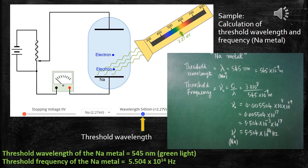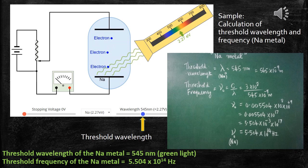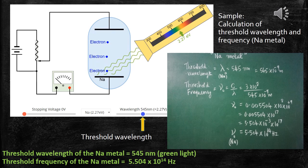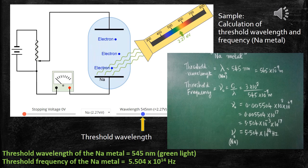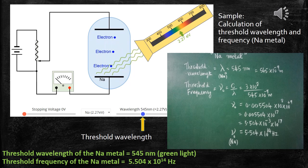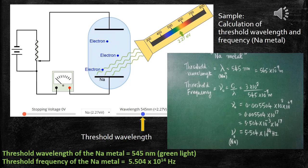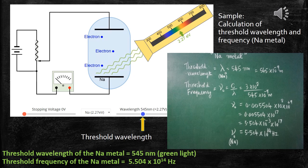When it is exactly reaching 545 nanometers — that is, the wavelength of the incident radiation is changed to 545 nanometers — exactly at that particular frequency, the first electron will be ejected out from the metal surface. That is the wavelength which is required to remove the electron from the metal surface. Such wavelength is called threshold wavelength, denoted by the letter lambda naught. That is the threshold wavelength of sodium metal.